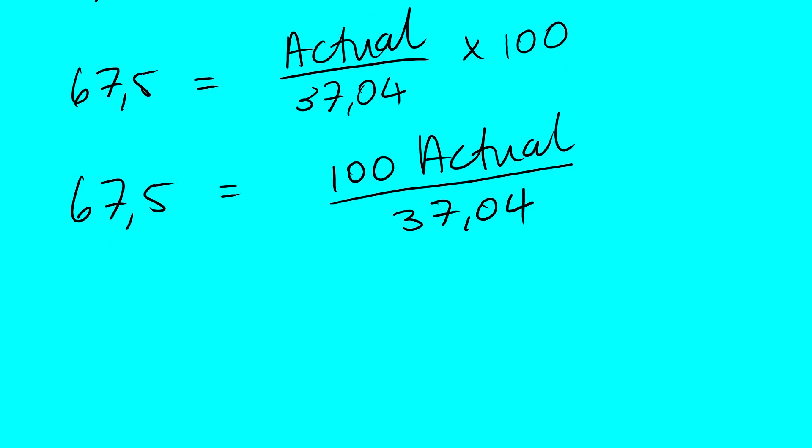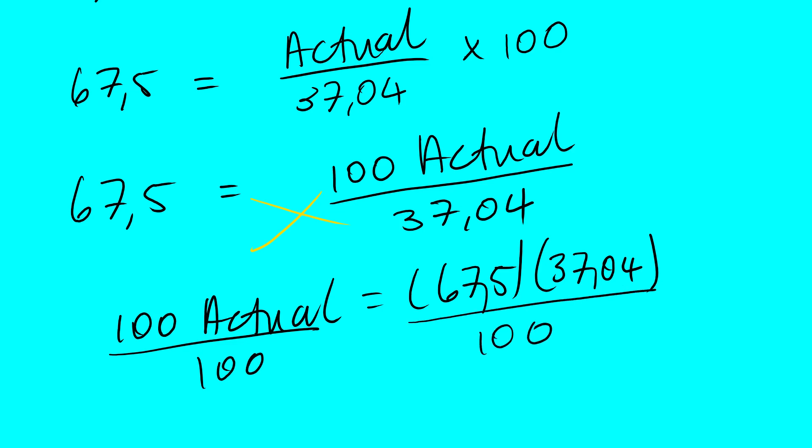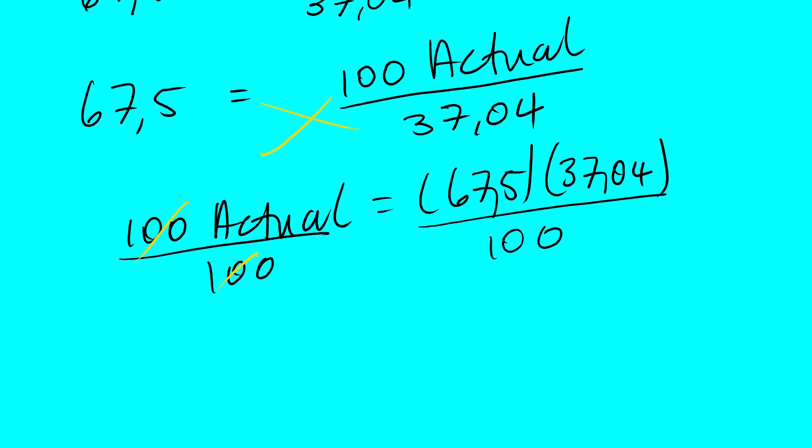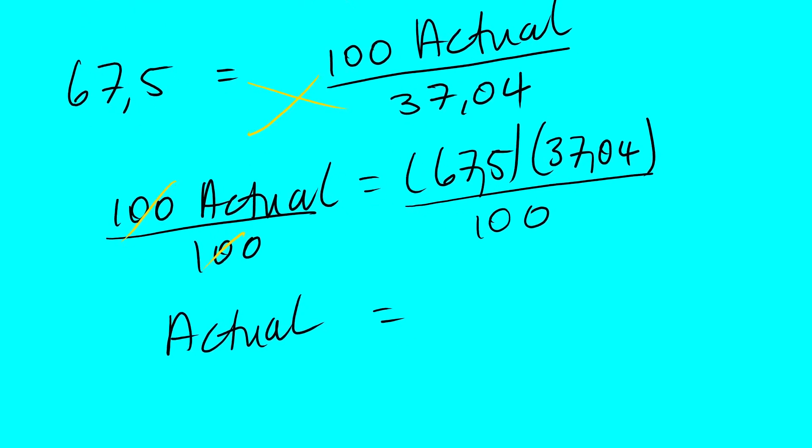So what we are going to do, we are going to cross multiply. We have 100 actual, it's equal to 67.5 times 37.04. Then from there we divide both sides by 100. This will result into 1, 1 multiplied by actual, it's actual mass. And then this will be 25 grams. So this is the final answer that we get.